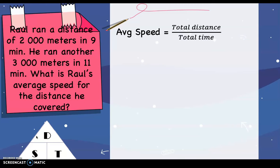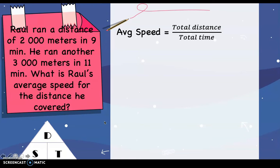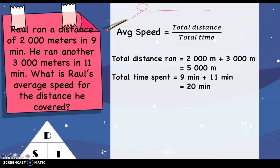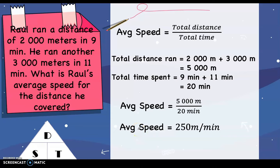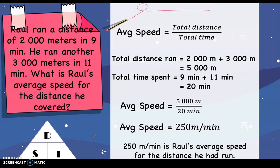Since the problem asks for average speed, we write the formula: average speed is equal to total distance divided by time. Remember that Raul ran at a different speed for his first and second run. To find the total distance, we add 2,000 meters plus 3,000 meters, which gives 5,000 meters. For the total time, 9 minutes plus 11 minutes equals 20 minutes. Substituting into the formula: 5,000 meters divided by 20 minutes equals 250 meters per minute. Therefore, Raul's average speed is 250 meters per minute.